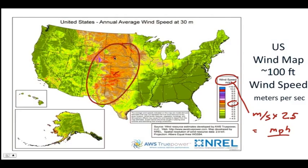Out here in the Northwest at 100 feet above the surface, there's not much. There are some regions, particularly around the Portland area, that do have some good wind speeds, but that's a very localized situation.